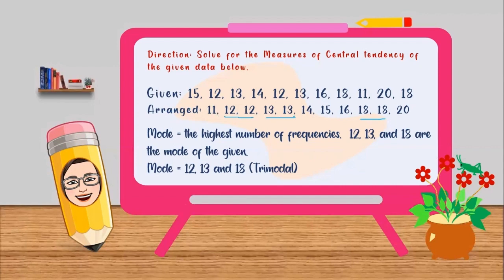We have two 12s, we have two 13s, and we have two 18s. Therefore, in this given set of data, we have three modes, and that is 12, 13, and 18. And let's identify the type of mode, which is trimodal.